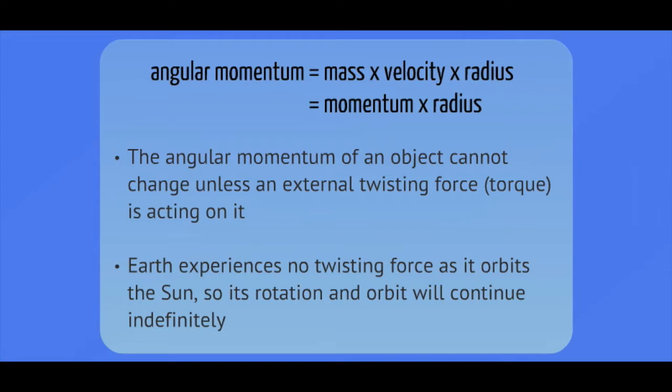So as the Earth orbits the sun, the only force is directed towards the sun. So there's nothing causing the Earth to twist or to speed up in its circular path. So it will continue to orbit continuously around the sun.